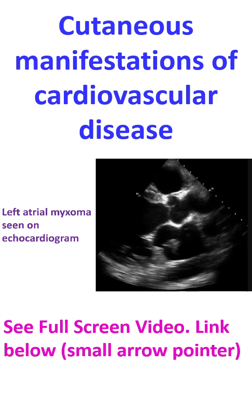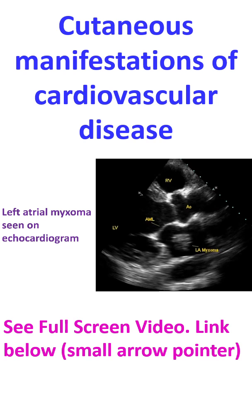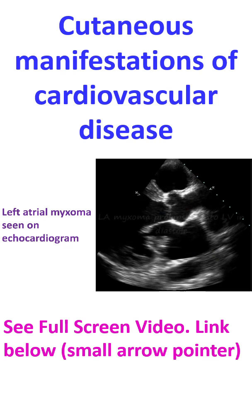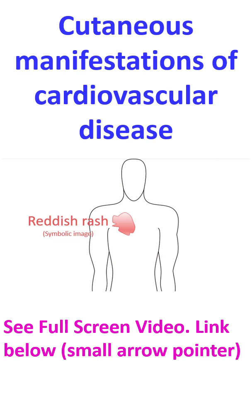Multiple lentigines, which are freckle-like brown spots, can be associated with familial myxomas and other cardiovascular syndromes like LAMB, LEOPARD and CARNEY complex. Erythema marginatum, seen on the trunk in acute rheumatic fever, is difficult to detect.